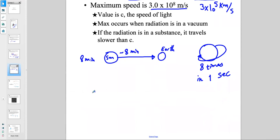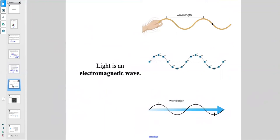To find the speed of light in a substance other than vacuum, you divide 3×10⁸ m/s by a value related to that substance. Light is an electromagnetic wave. The visible light we see is an electromagnetic wave, and it has properties including frequency — the number of oscillations per second, measured in hertz (Hz), or s⁻¹.